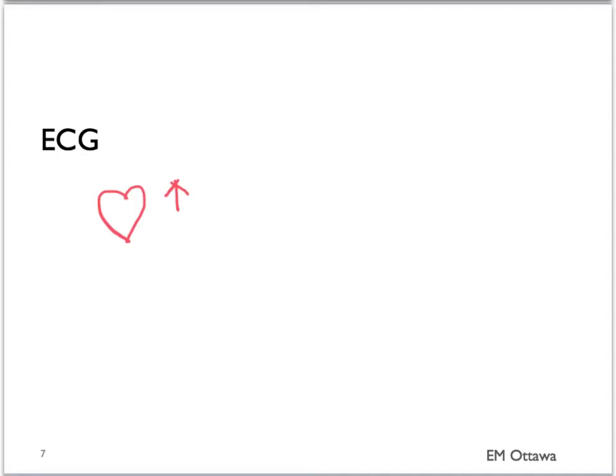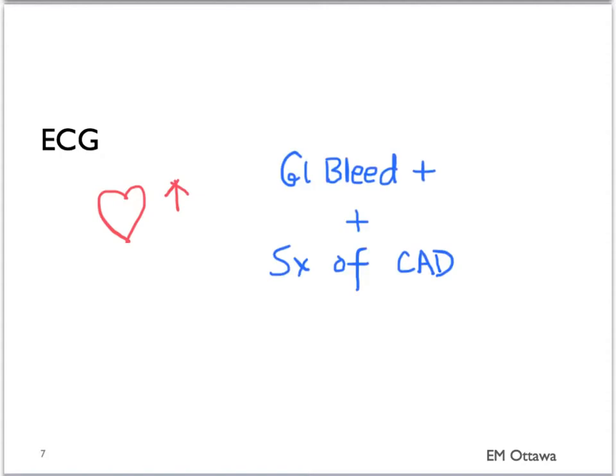We'll move on to imaging in patients with GI bleeds. The loss of a large amount of blood can cause the heart to work much harder, creating a huge demand on the heart. In patients with severe GI bleed and symptoms suggestive of coronary artery disease such as chest pain or shortness of breath, you want to order an ECG to look for ischemia.